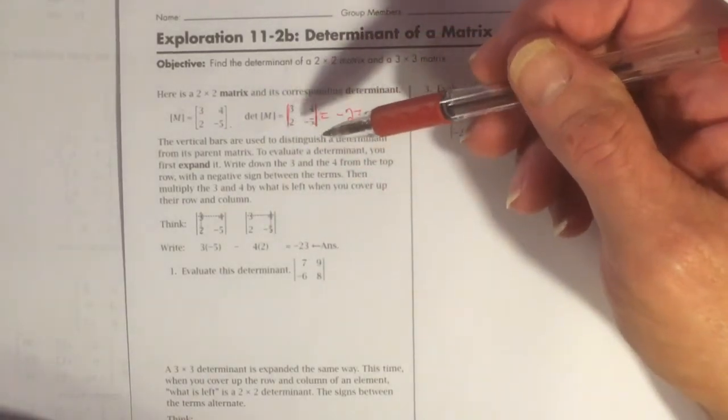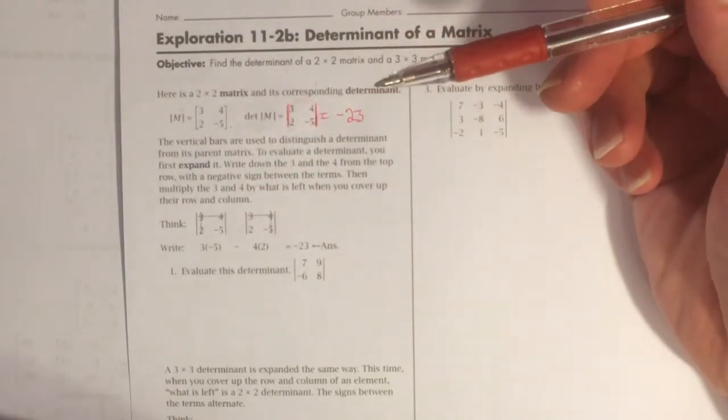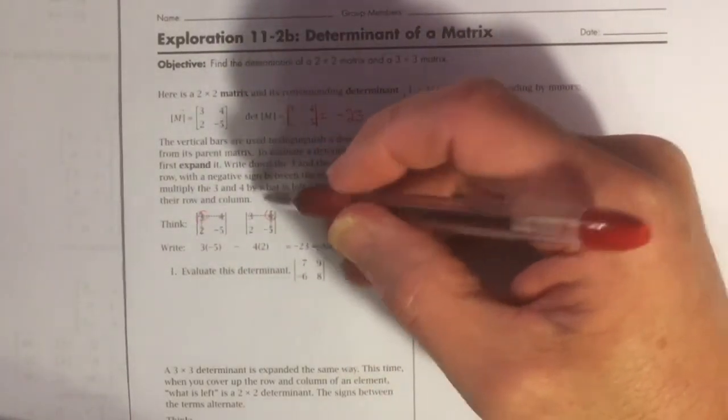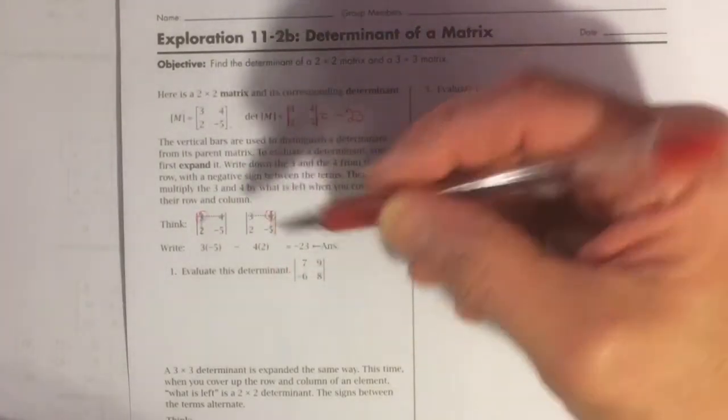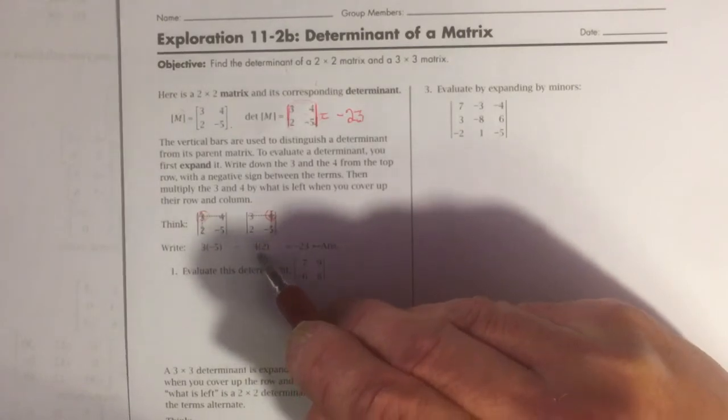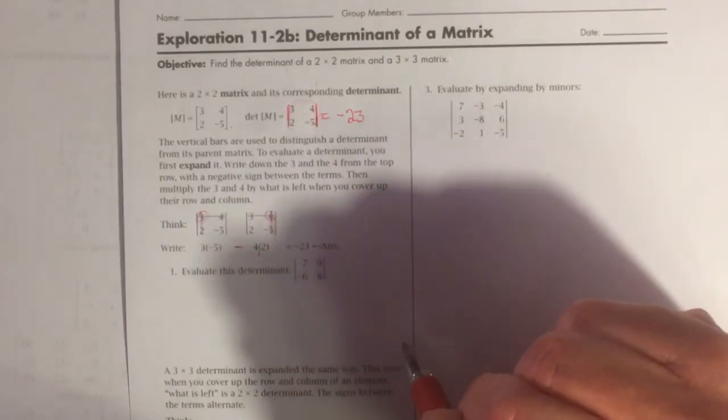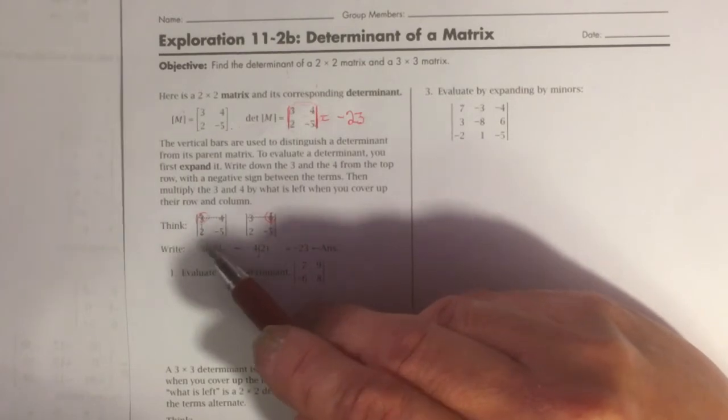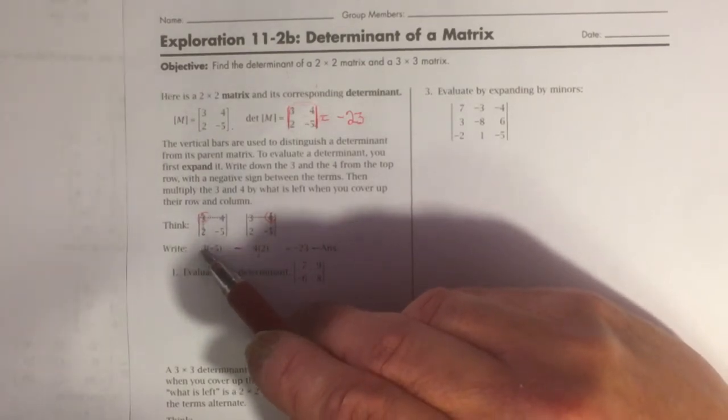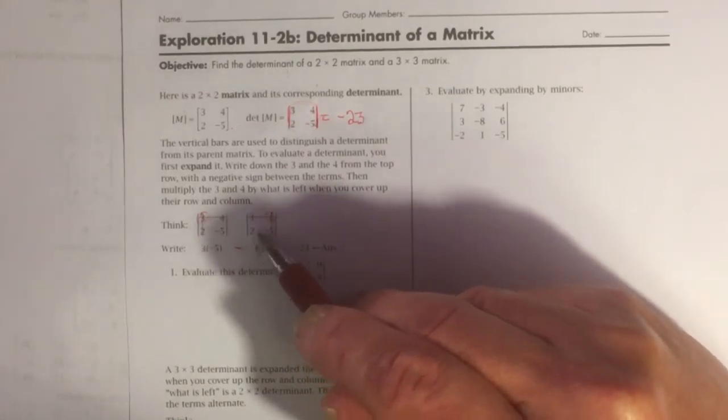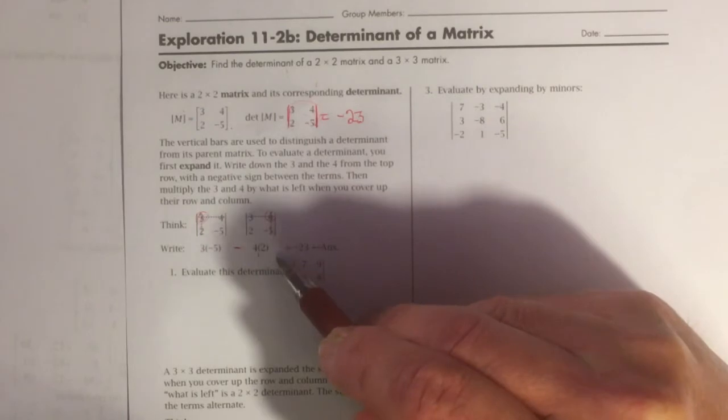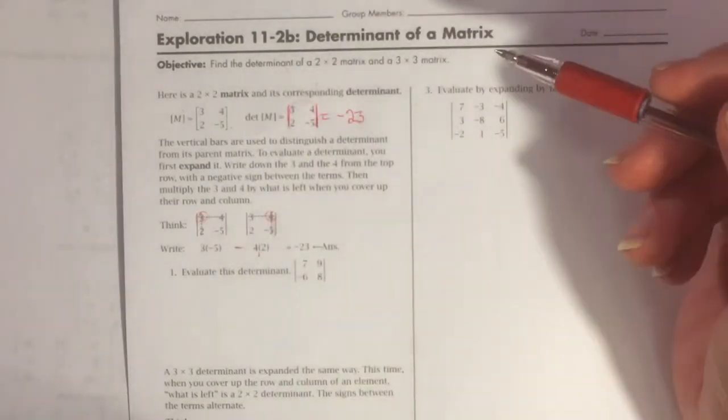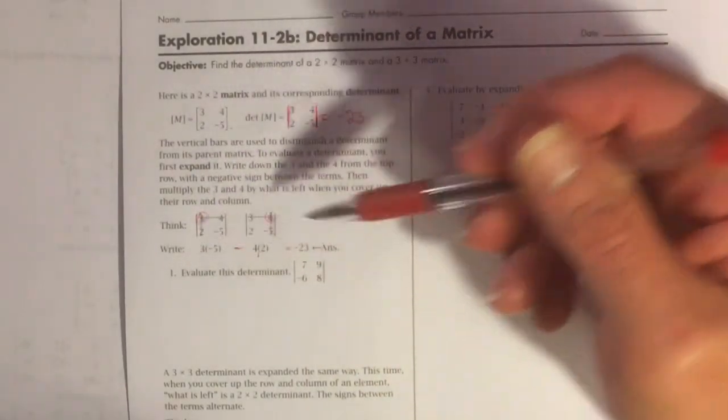This is called expanding a matrix, and the way you do that is by taking the number in the intersections of these two lines here and here and writing them down. Here's the three, here's the four, and putting a minus sign between them. And then multiplying this number times the number from the intersection and this number, the remaining element in the matrix, by the number in the intersection. You'll notice that's the same thing that we did, but it's a different process to get there.